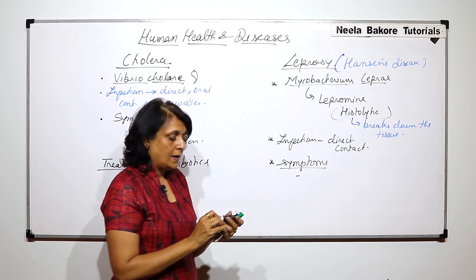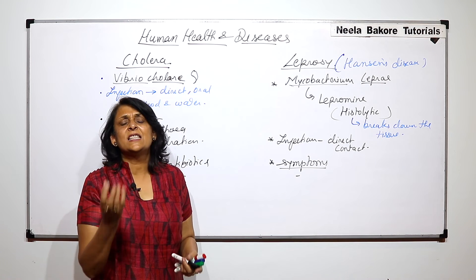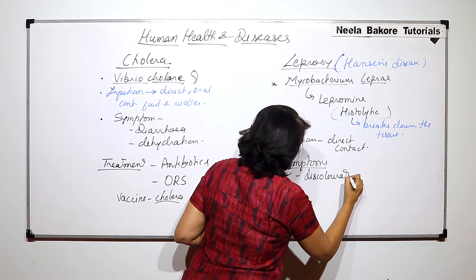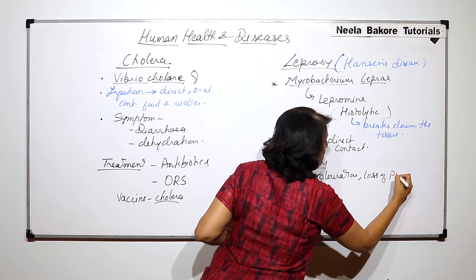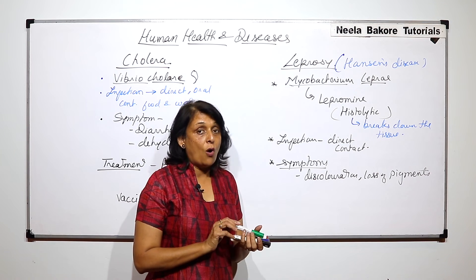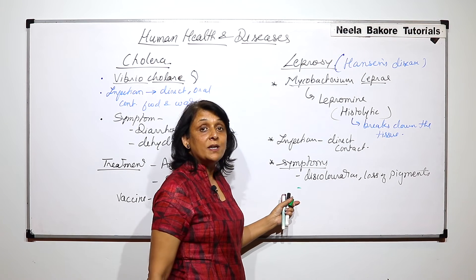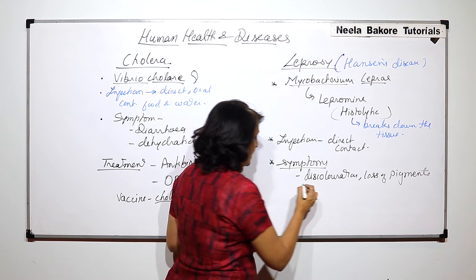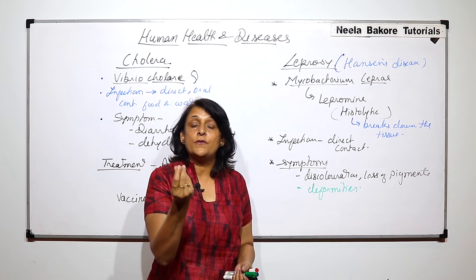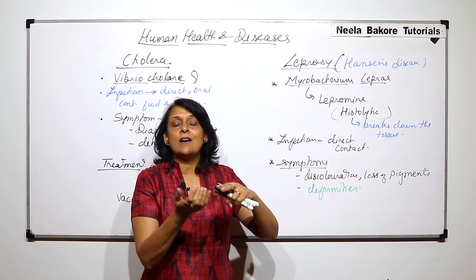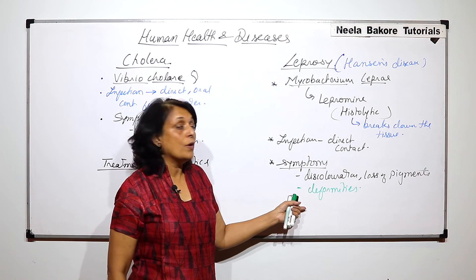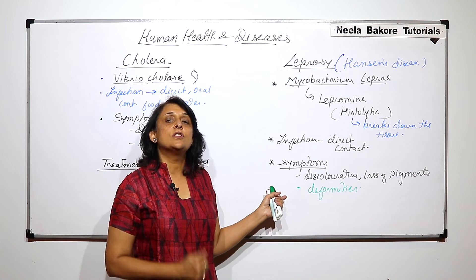Symptoms of leprosy include discoloration of the skin — the pigmentation is lost. Light-colored patches appear first, especially on the extremities. Then deformities occur because the tissue is getting broken down and digested. These deformities can result in loss of complete digits — slowly the tissue will start to dissolve starting from the extremities.